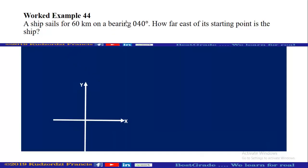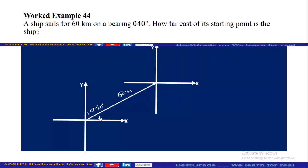A ship sails for 60 kilometers on a bearing of 40 degrees. We are calculating how far east of the starting point the ship is. The ship moves from the starting position to its final position. Another way to think about this: move east first, then north. The eastward distance is what we are looking for. Let this distance be how far east, and we know this angle to be 50 degrees.